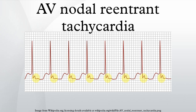In uncommon AVNRT, the anterograde conduction is via the fast pathway and the retrograde conduction is via the slow pathway. Multiple slow pathways can exist so that both anterograde and retrograde conduction are over slow pathways. Because the retrograde conduction is via the slow pathway, stimulation of the atria will be delayed by the slow conduction tissue and will typically produce an inverted P wave that falls after the QRS complex on the surface ECG.